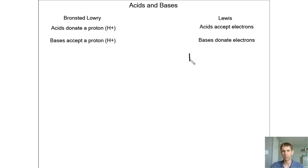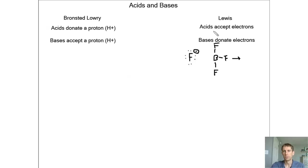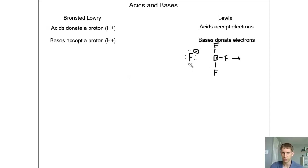Let's look at an example reaction where we've got a couple of starting materials. Let's say we've got the fluoride anion. That has a negative charge because it has eight electrons — fluorine normally has seven. And that's going to react with a trifluoroboron compound, so we've got three fluorines attached. Looking at the specific definition: a Lewis acid accepts electrons, and a Lewis base donates electrons. Since this fluoride anion has a negative charge on it, that's probably what's most likely to donate electrons.